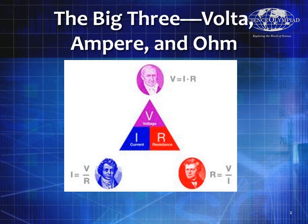Last time we talked about the big three: Volta, Ampere, and Ohm, and Ohm's Law — V equals IR — which can be used virtually any time to determine the current and the resistance using the three equations provided here.